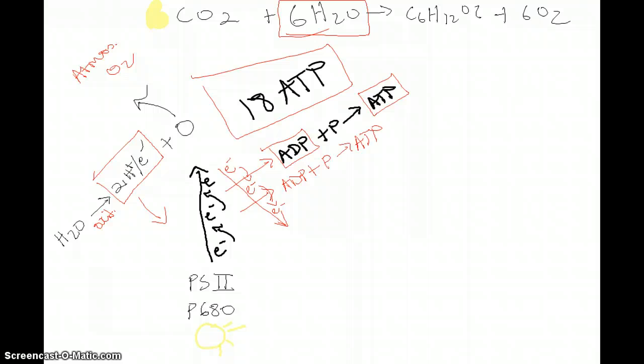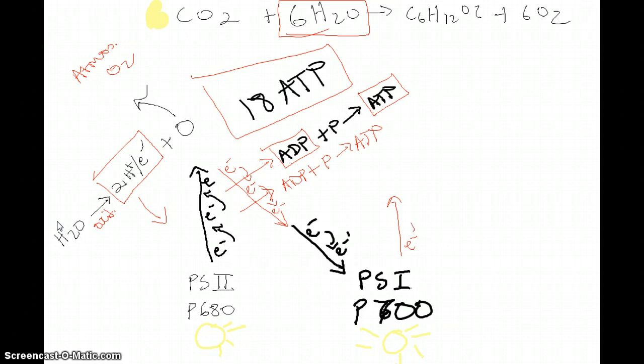As these electrons go down, they are led into photosystem 1, also known as P700. These electrons are led down and they get excited again because of the sunlight in the photosystem. The electrons go up the gradient again.